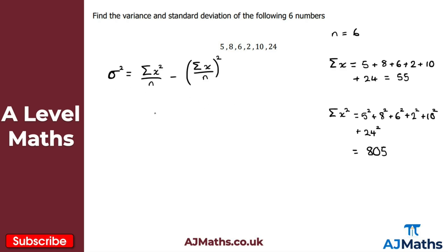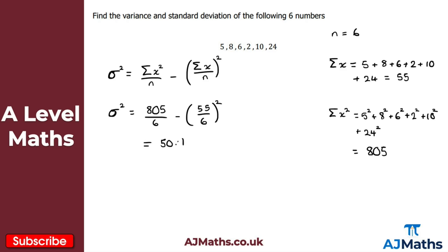Now I have everything needed to calculate the variance. So σ² = 805/6 − (55/6)², and putting this into the calculator gives 50.1 to three significant figures. So the variance is 50.1.